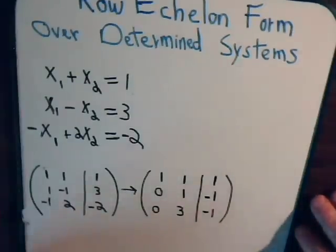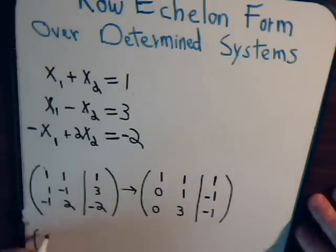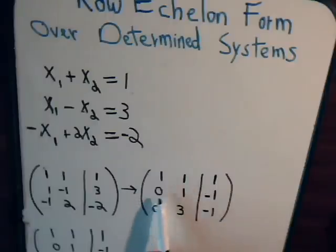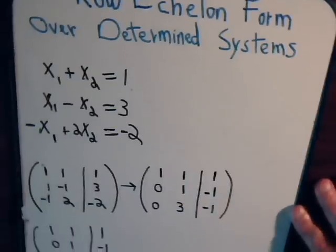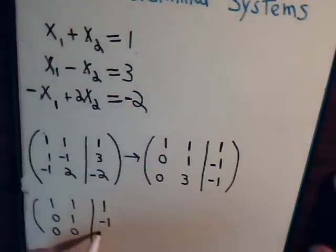So these numbers stay unchanged, we have 1, 1, 1, these numbers stay unchanged. Now we imagine multiplying this by negative 3 and adding, so this stays 0, this is 0, negative 3 times negative 1 that's positive 3 plus negative 1 that's positive 2.